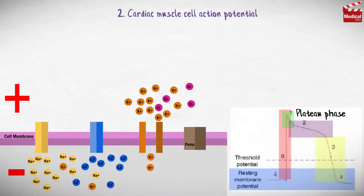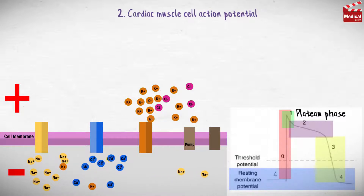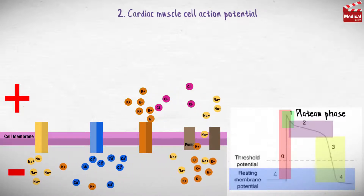Then phase 3: calcium channels close, and rapid outward movement of potassium occurs, making the inside more negative compared to the outside. That continues until reestablishing the resting membrane potential, which is phase 4. However, sodium and potassium ions are now on the wrong side of the membrane, so the active sodium-potassium pump switches the location of ions and restores normal resting membrane potential.